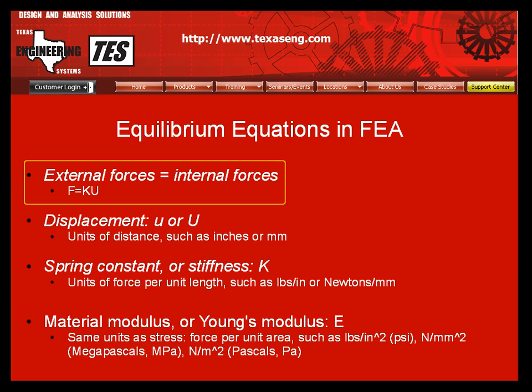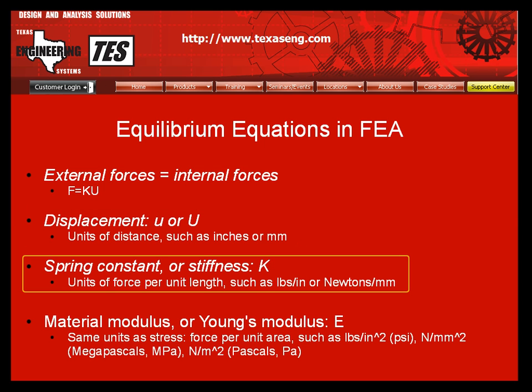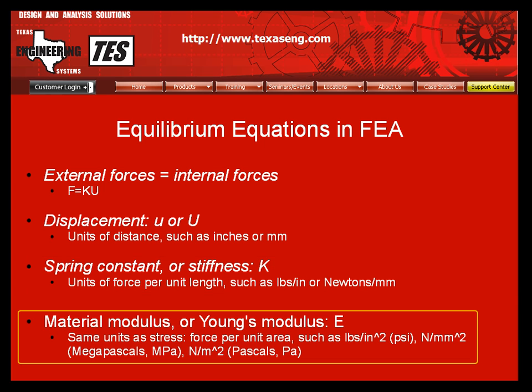But what are the internal forces? Here we see internal forces expressed as K times U. As we shall see, U is the displacement with length units of distance, and K is the spring constant with units of force per unit length. The spring constant can be derived using the material modulus, also known as Young's modulus E, and some other factors.